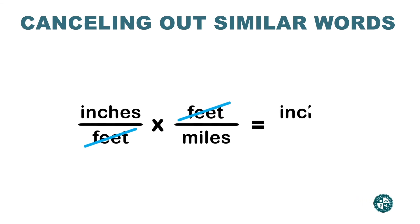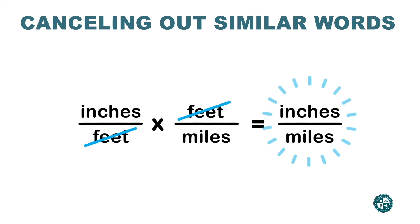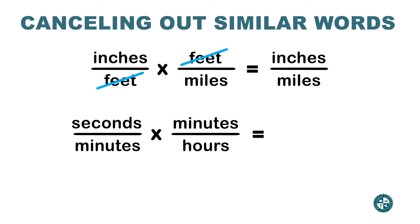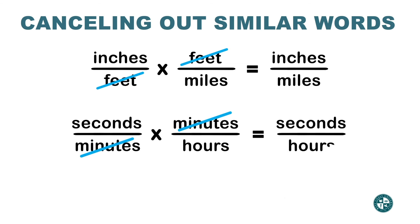What word was left on the top? Inches. What word was left on the bottom? Miles. Let's do another similar exercise. We're multiplying two rates: seconds over minutes and minutes over hours. What word is in common on the top and on the bottom? Minutes. There's nothing else to cross cancel, so my final answer is seconds over hours.